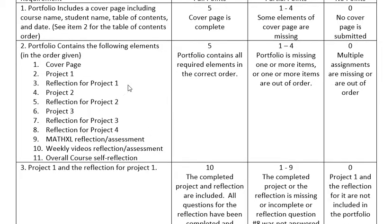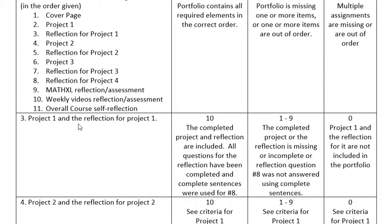So then you're going to start putting in the actual items that you've done. The first one should be your first project, which was the Excel project for us in the spring. Different quarters we might do different ones in different order, so I've just called them project one. You need the project and the reflection for that project. Ten points for having both of those in there and complete. I am going to be looking at your reflection — question eight asks you to use three to seven sentences, and they should be well formed.